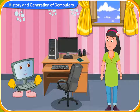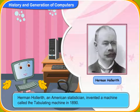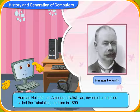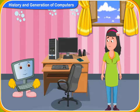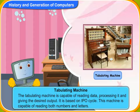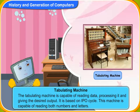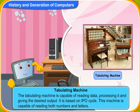Let us now discuss about the tabulating machine. In 1890, Herman Hollerith, an American statistician, invented a machine called the tabulating machine. What does that machine do? The tabulating machine is capable of reading data, processing it and giving the desired output. It is based on IPO — or input, processing and output — cycle. This machine is capable of reading both numbers and letters.